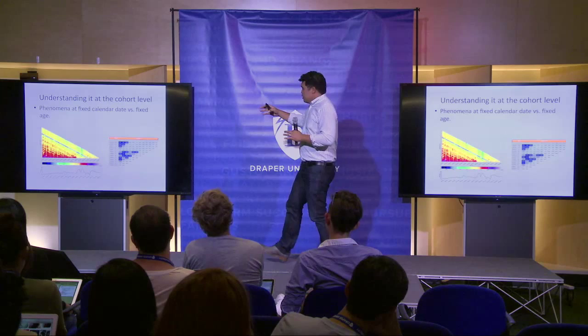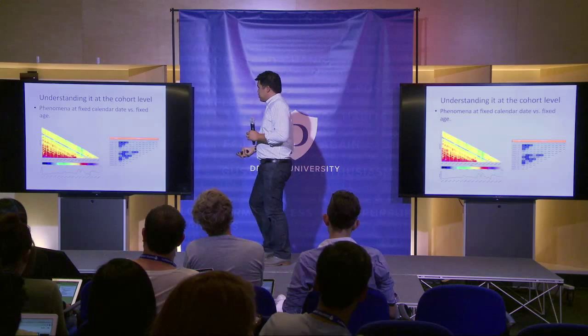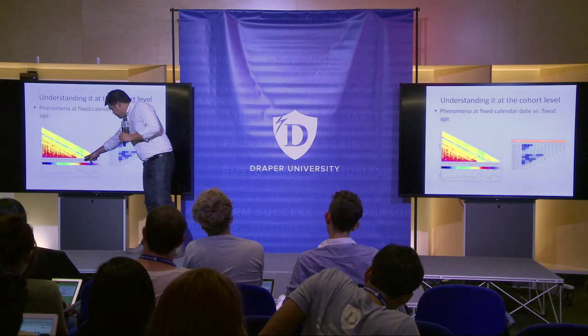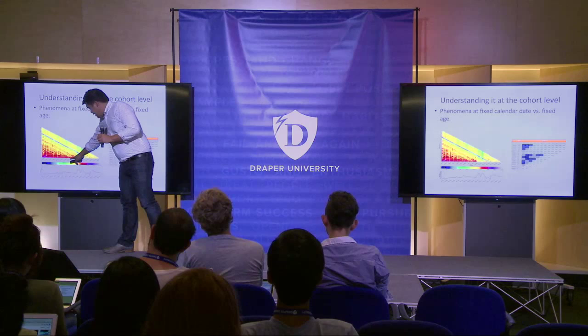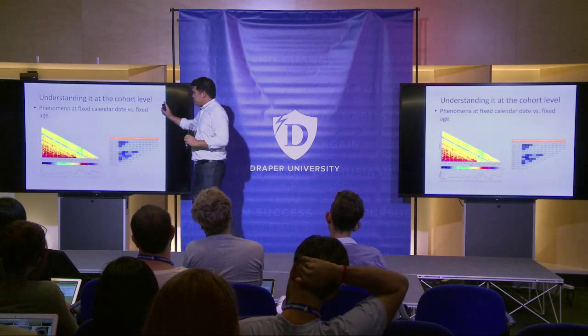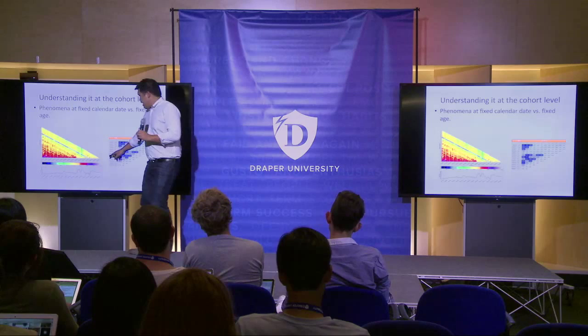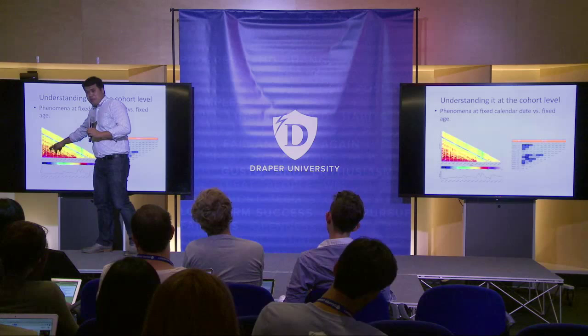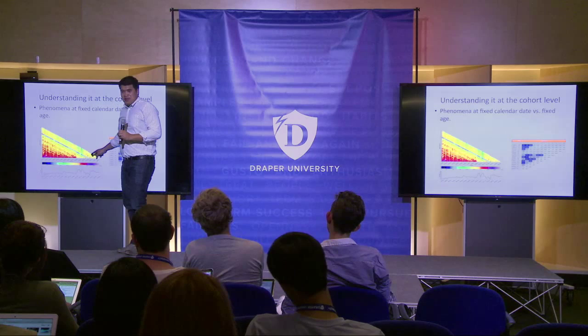A visualization we typically use is at the cohort level. On the left, the x-axis is the month or week of joining — so here, July 2014, this many users joined. When you go up the y-coordinate, that's how many weeks in age those users are. Users from July have been around for this many weeks; users who just joined haven't been around as long.